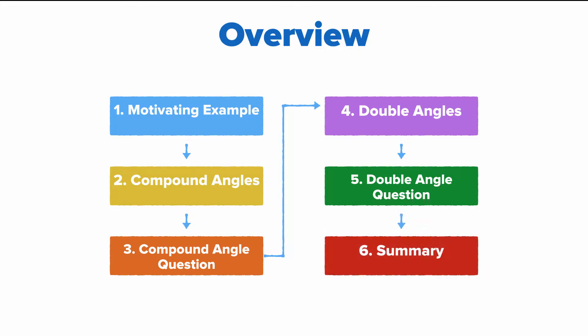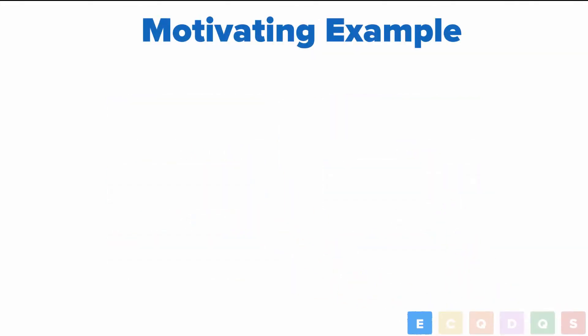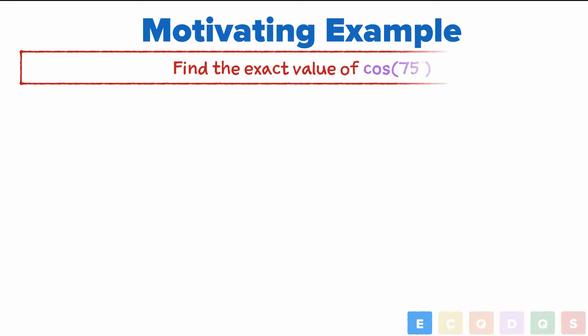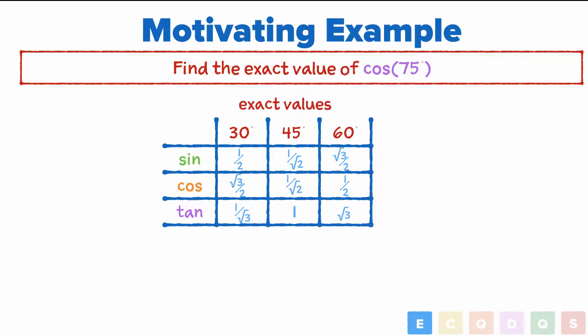Okay, so let's say we walked into an exam all fresh-faced and ready to take on the world, and we got this question: Find the exact value of cos 75. How would we approach it? We know the exact values of things like 30, 45, and 60, but never 75. Say, isn't 75 equal to 30 plus 45? Maybe we could get some use out of writing cos 75 as cos of 30 plus 45.